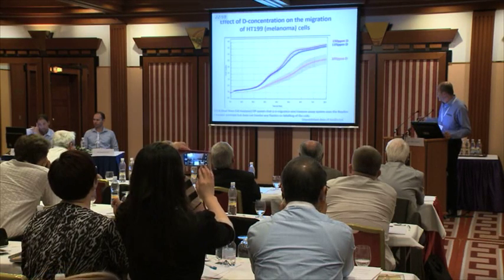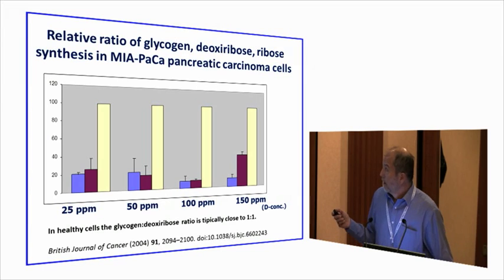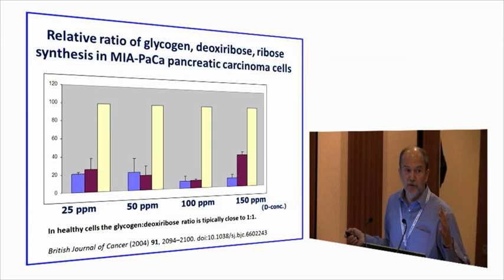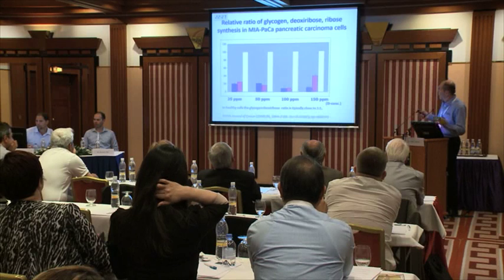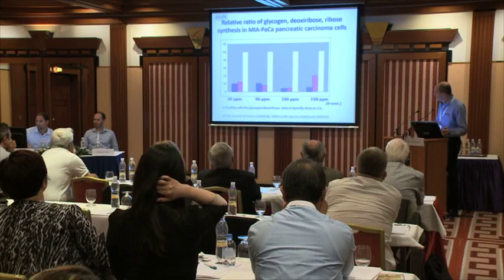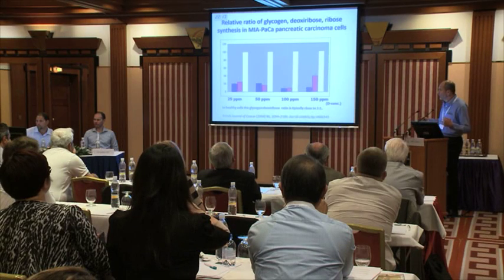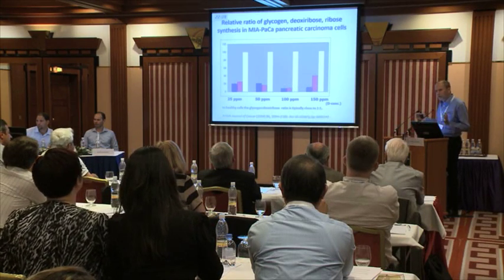In collaboration with Professor Boros: when we check the ratio between glycogen, deoxyribose, and ribose, this ratio is typical for a cancer cell line. The MIA pancreatic cancer cell in normal deuterium water shows a typical cancer phenotype for this ratio. But when we reduce the deuterium concentration, it becomes typical for healthy cells. Simply changing the deuterium concentration influences the metabolism of these cells, pushing it in the right direction.